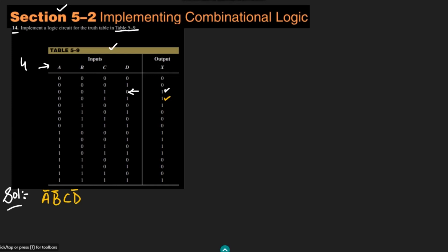For the second 1, the input is 0011, so it will be A complement, B complement, C, and D. The third one is 0100, which gives me A complement, B, C complement, D complement — because only B is 1 here while all the other three are 0. In order to make this product equal to 1, all of them should be equal to 1, so I have complemented the 0 terms.